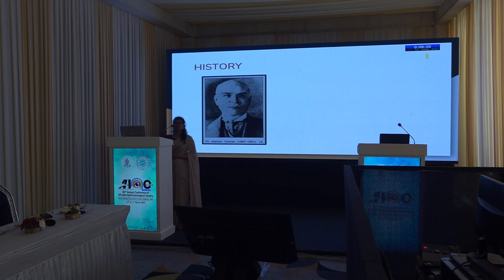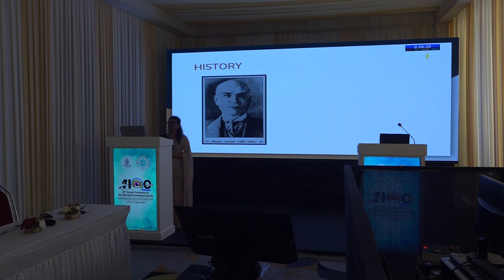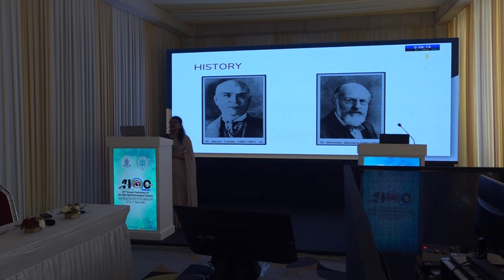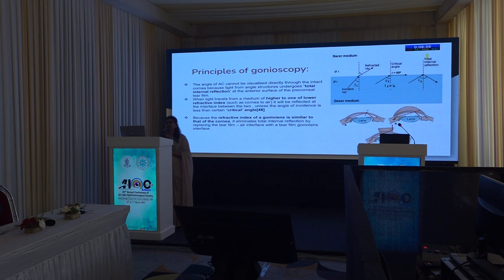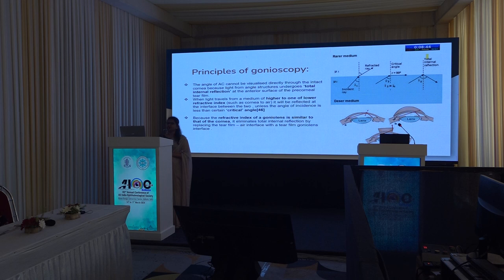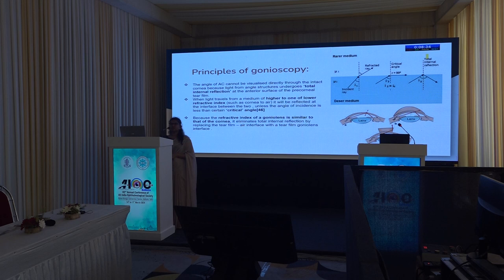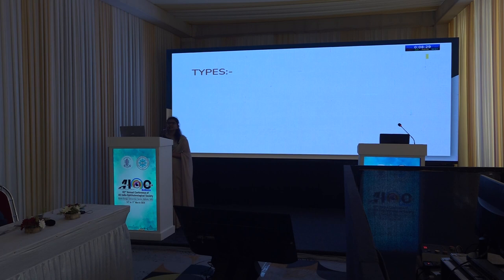A great pioneer, Alexios Trantas, performed gonioscopy for the first time by visualizing the angle of the anterior chamber in a keratoglobus eye using a direct ophthalmoscope. It was later recognized that in a normal eye the corneal angle cannot be visualized due to total internal reflection — when the incident light angle exceeds the critical angle, light is reflected rather than refracted out. When a lens with the same refractive index as the cornea (1.37) is placed in front of the eye, this phenomenon is eliminated — this is the principle of gonioscopy.